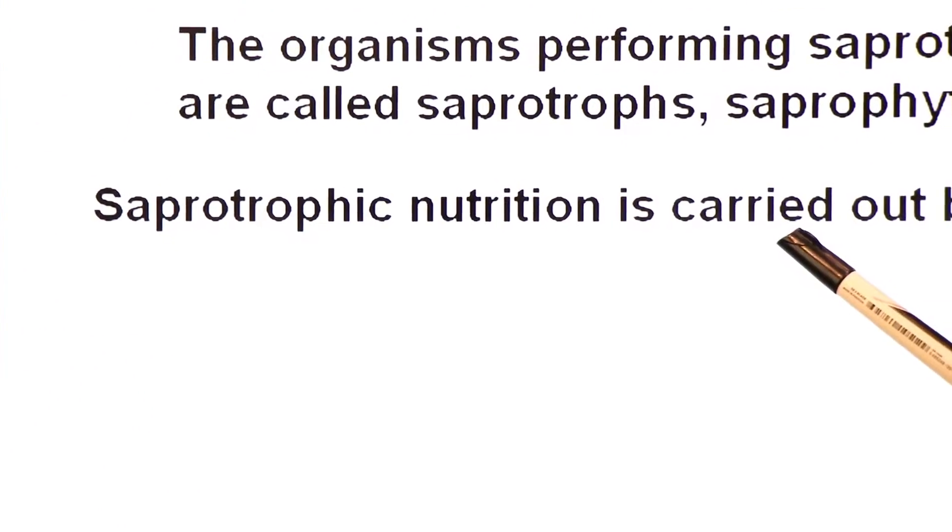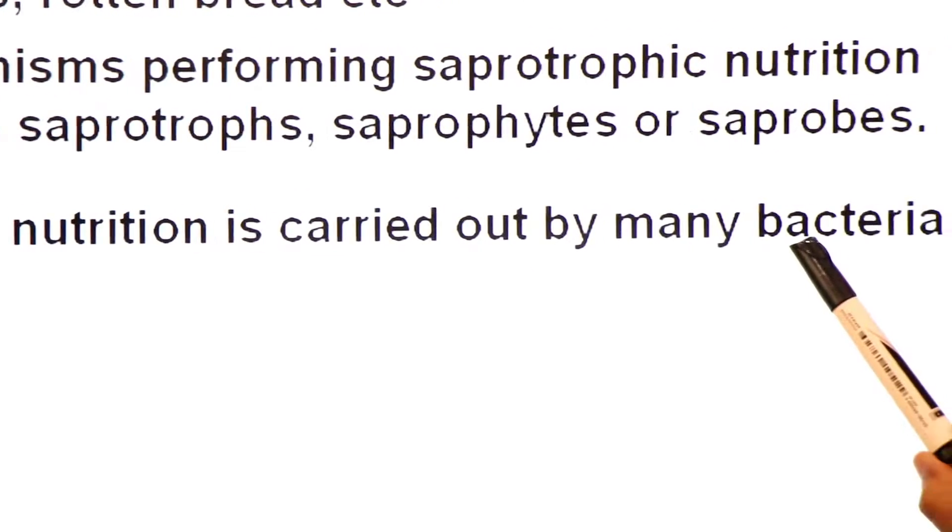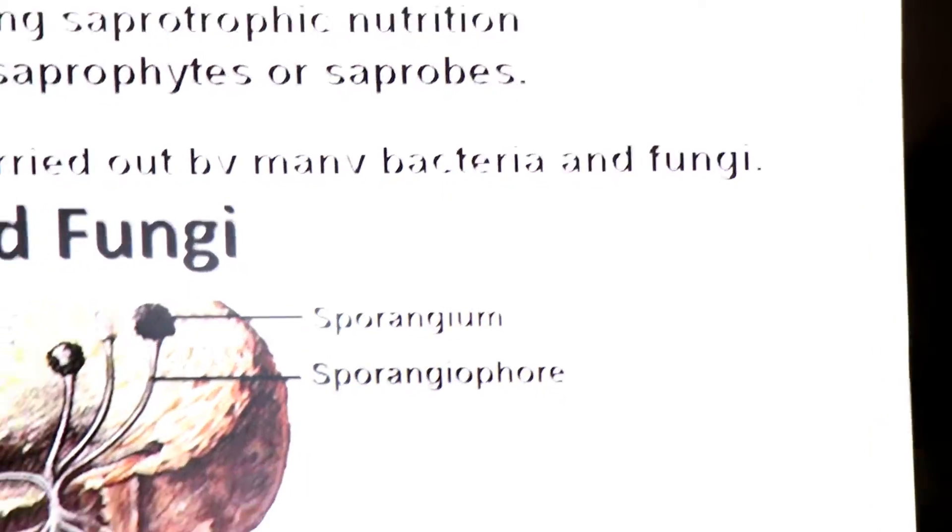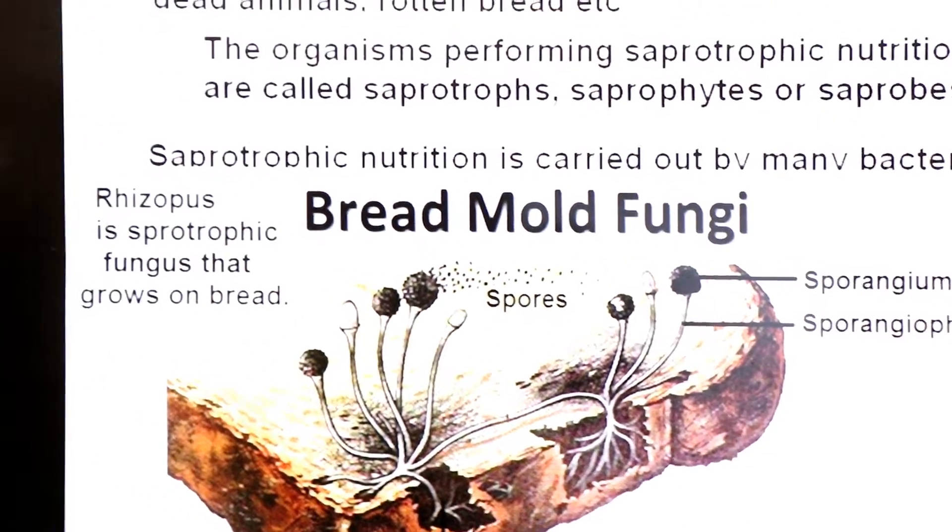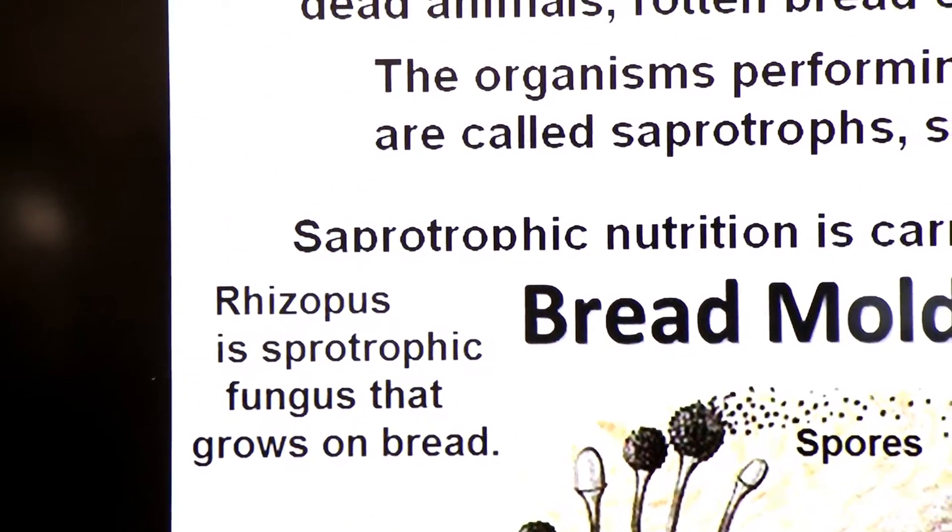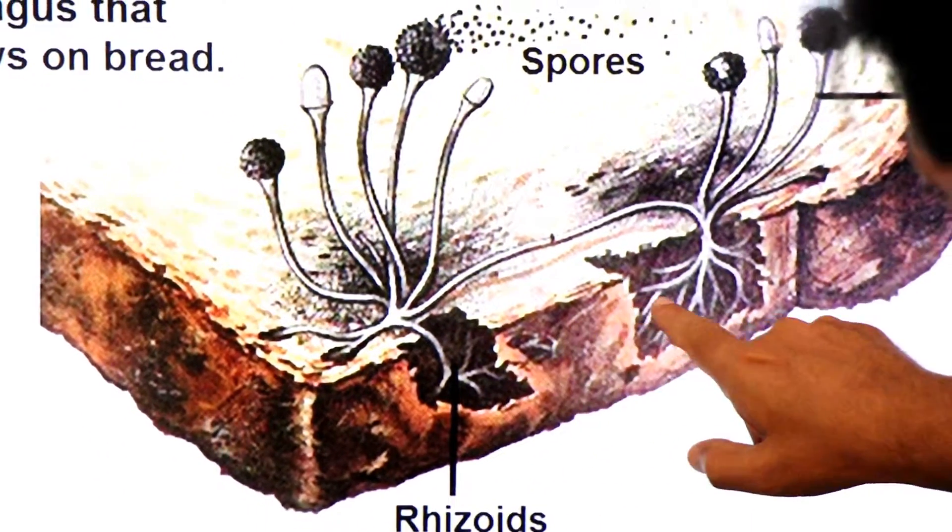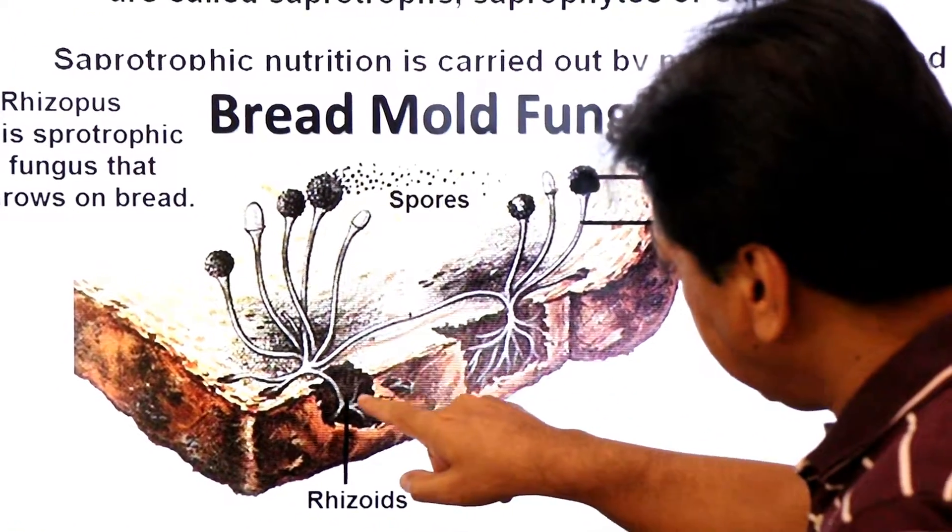Saprotrophic nutrition is carried out by mainly bacteria and fungi, may be called decomposers. For example, dear students, we have a saprotrophic fungi. You see here bread, and you see here this is rotten bread, decaying bread.